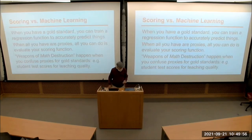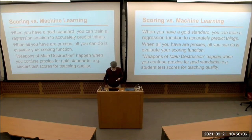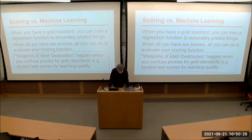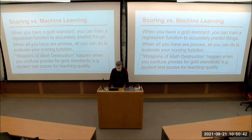In machine learning you often assume the label you got is the right thing. In sensitive data analysis you have to think about whether it's really the same thing. If you have a gold standard, you use machine learning. If you don't, all you can do is come up with a scoring function using proxies and see how well it does. There's a book I'll recommend called 'Weapons of Math Destruction' about societal misuse of machine learning models.